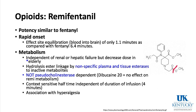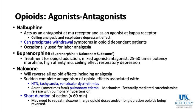Opioid agonists and antagonists: nalbuphine acts as an antagonist at the mu receptor and an agonist at the kappa receptor. It has a ceiling analgesic and respiratory depressant effect, which may make it somewhat safer. Because of its mu antagonism, it can precipitate withdrawal symptoms in opioid-dependent patients. Occasionally it is used for labor analgesia.